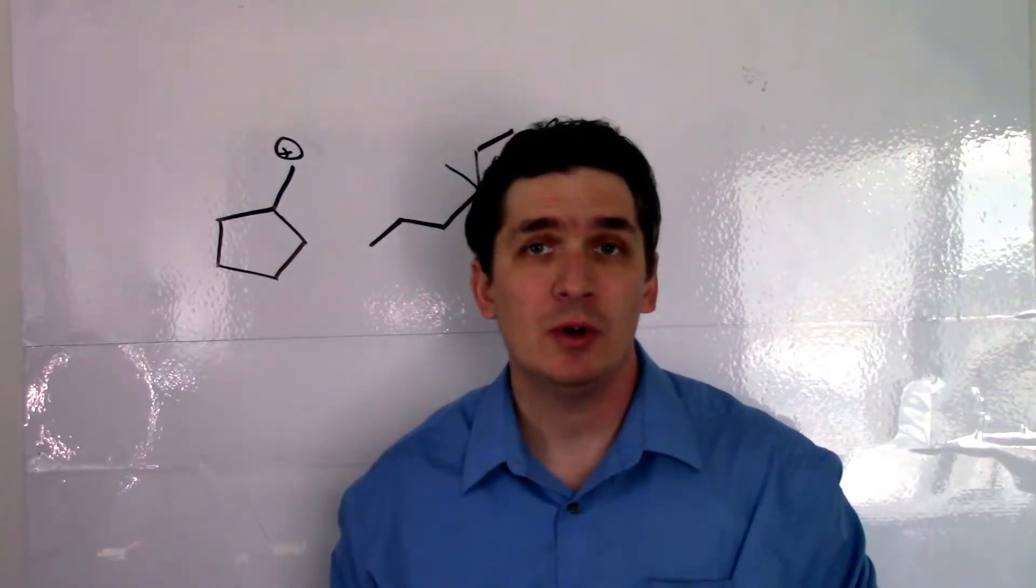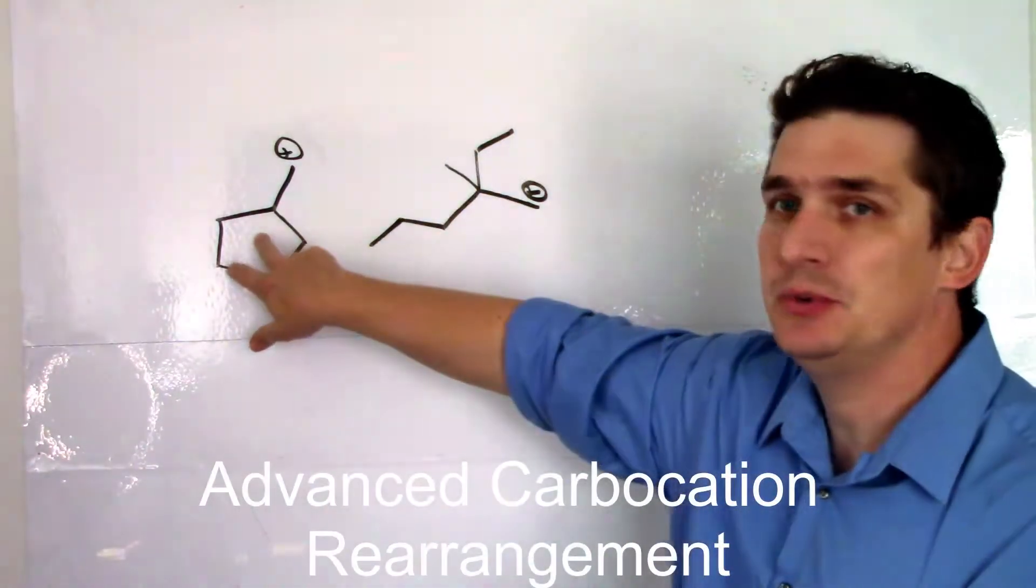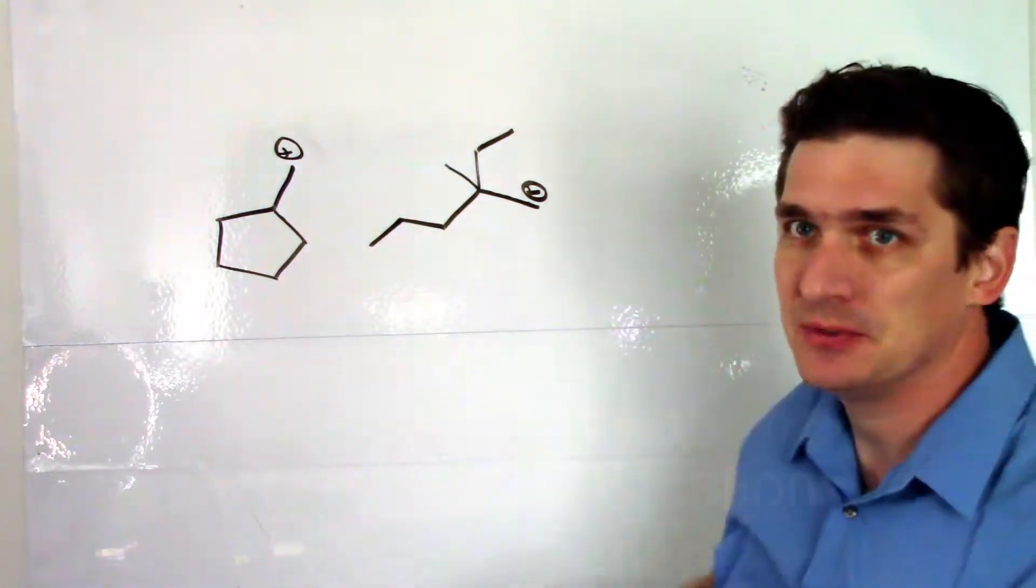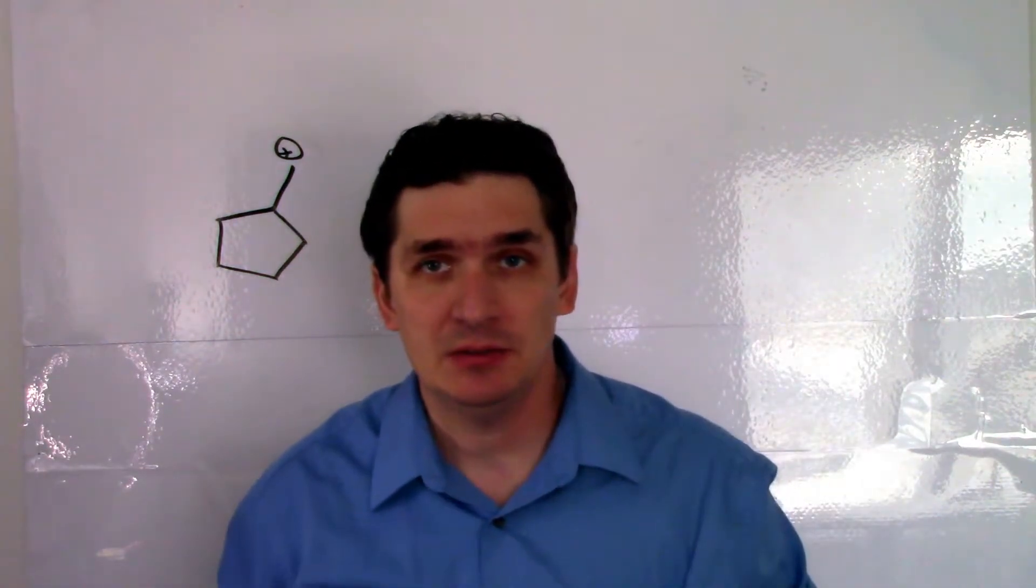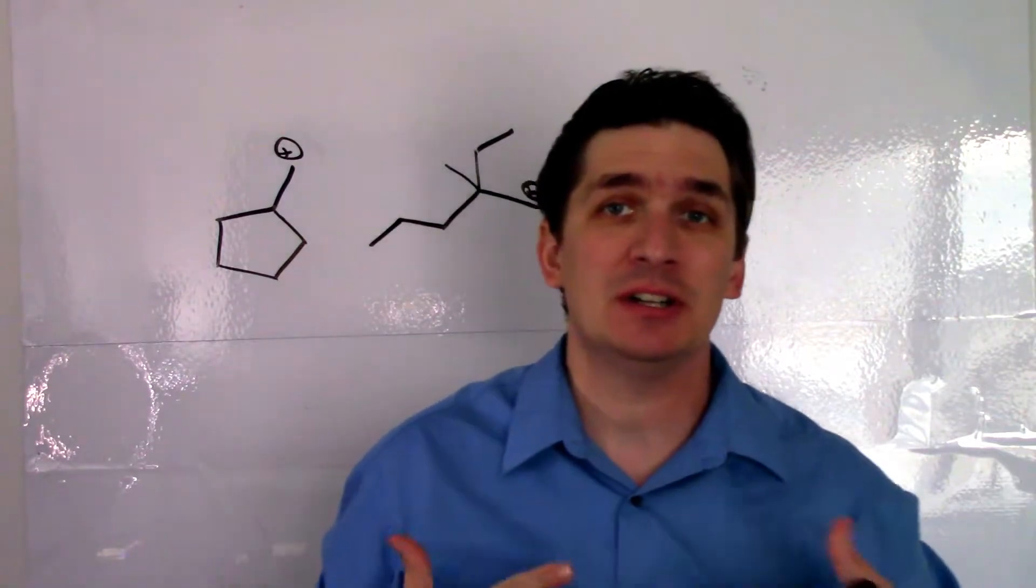All right, so now let's talk about a more advanced form of carbocation rearrangement here. I'm gonna draw two examples but we're gonna start with this bigger example first. Carbocation rearrangement - what we move can really be anything that's on an adjacent carbon.